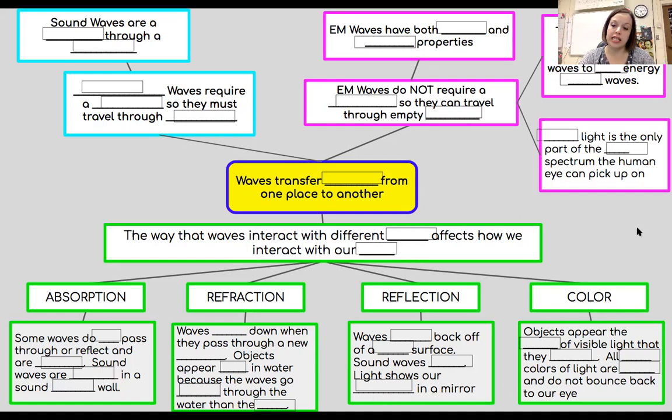So the very last thing I'm going to talk about with you to review is color. And my chart here is super colorful. Colorful, right? Well, for color, you should say objects appear the color of visible light that they reflect. So the color you see something as is actually the color it's reflecting off of it. All other colors of light are absorbed and do not bounce back to our eye.